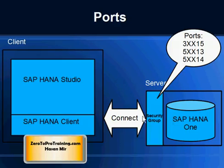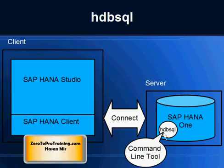The security group controls traffic coming in from the outside world into the machine. That's why when we used the HDBSQL tool in one of the past videos, we did not have to make any changes to the security group. That tool also made a connection to the SAP HANA 1 database using port 30015.